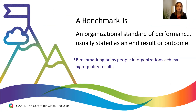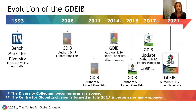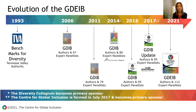Going to the evolution of the GDEIB — this started back in the 1990s. This is not a new tool; it has been around for decades and used around the world. It started with the authors and owners of the GDIB at that time gathering 47 expert panelists from around the world to create these benchmarks. About every three to five years they go through a review process and update them based on what's happening in the industry. Most recently there was an update in 2021, and I had the privilege of being on the panel to help review these standards.